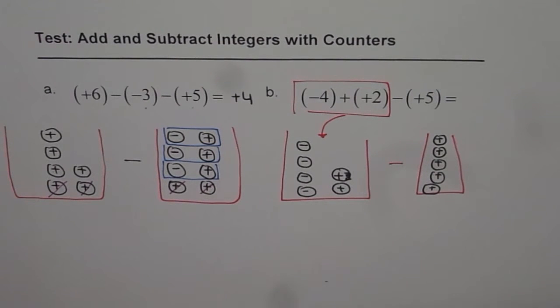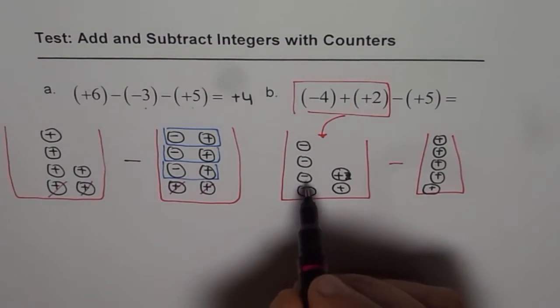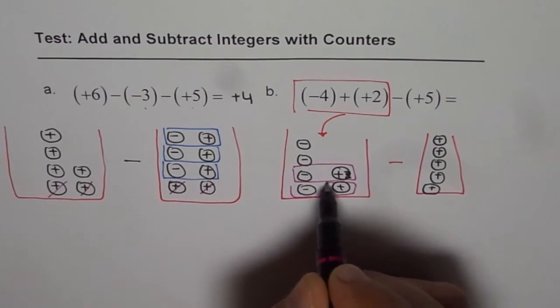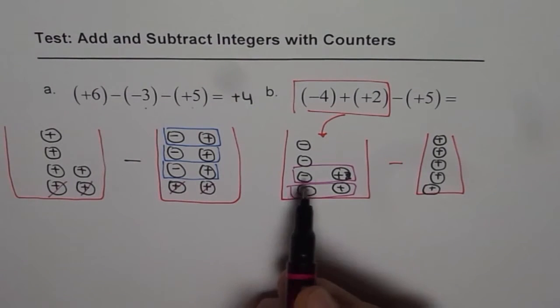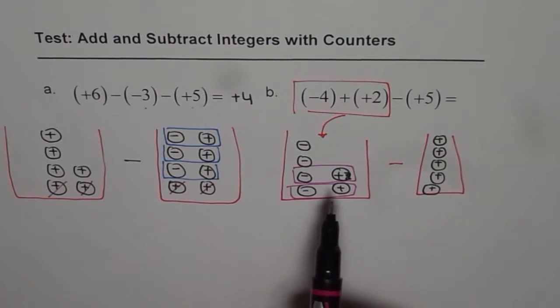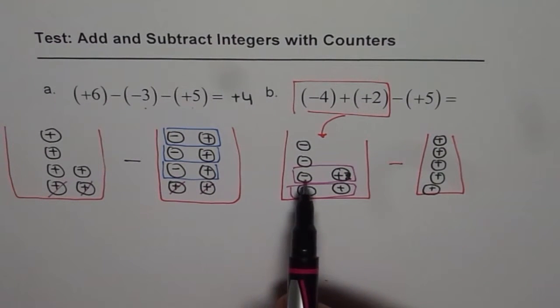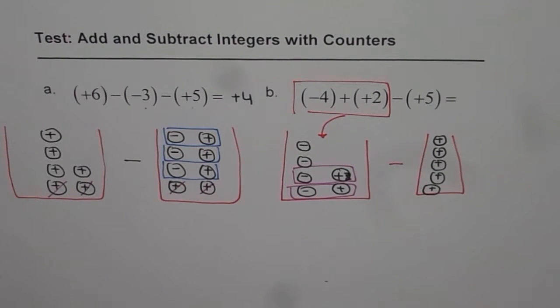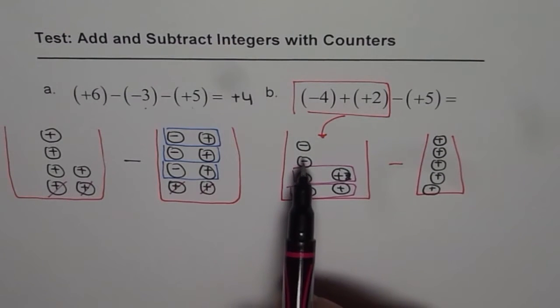So let us first find the 0s. So plus and minus becomes 0, plus and minus becomes 0. So these 2 pluses are nullified with their opposite integers. Plus and minus becomes 0. We are left with (-2).